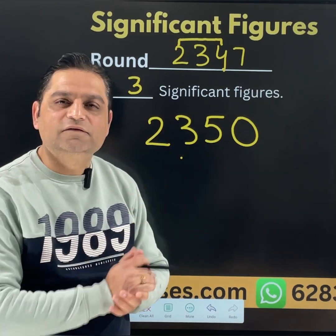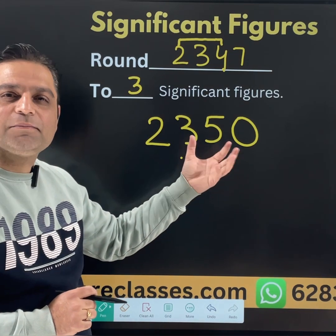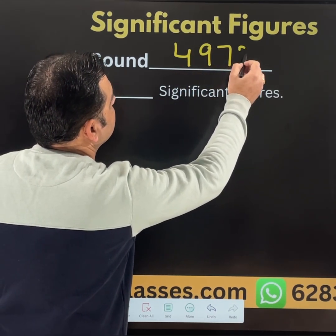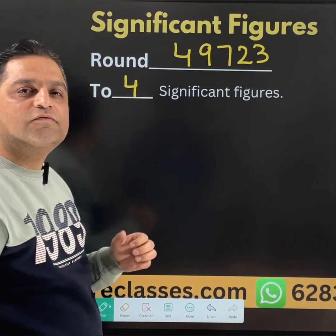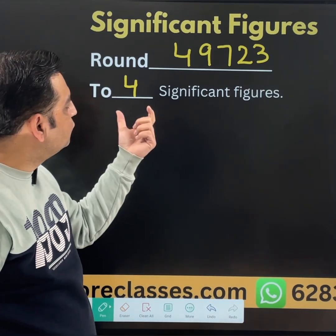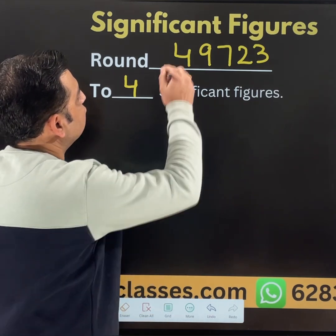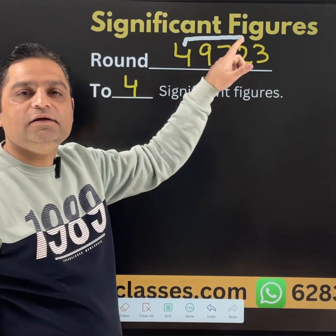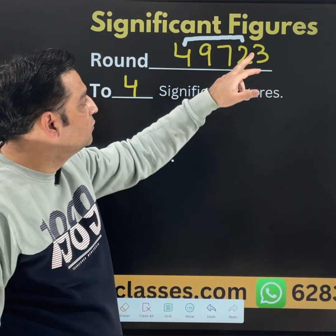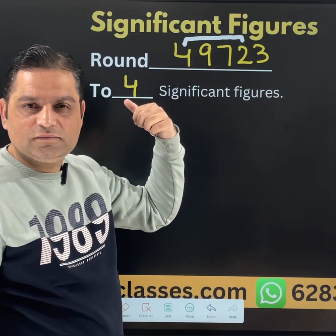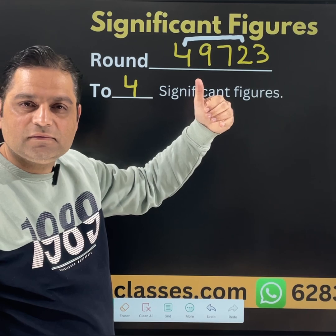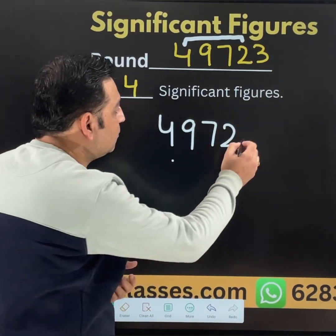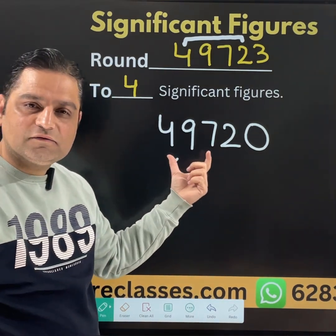This is the way the rules will be discussed one by one. Let us suppose we have 49723 and we want it rounded to 4 significant figures. In case of 4 significant figures, check the first 4 numbers: 4, 9, 7, 2. Now check the next number — it is 3, which is less than 5. If this number is less than 5, then no change will happen. We write 4, 9, 7, 2 as it is, and at the end place 0. So this is what 4 significant figures looks like here.